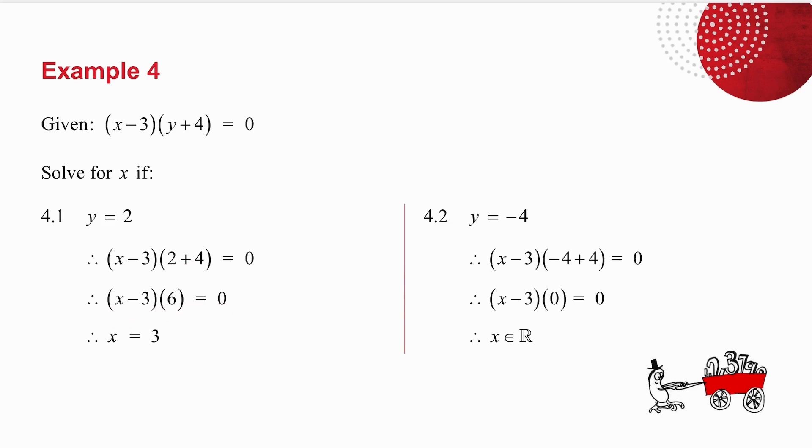The only way I can get that is if one of them is 0. 6 is not equal to 0, which means this bracket must be equal to 0, which means x must be equal to 3.